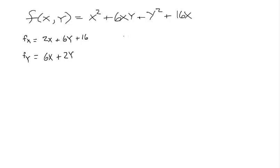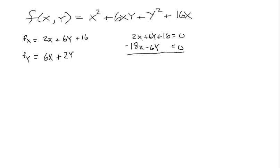To find our critical value, we solve this system of equations using elimination. We multiply f_y by negative 3 to get negative 6y, giving us negative 18x − 6y = 0. Setting f_x equal to 0 and adding down, we get negative 16x + 16 = 0, and solving for x gives us x = 1.